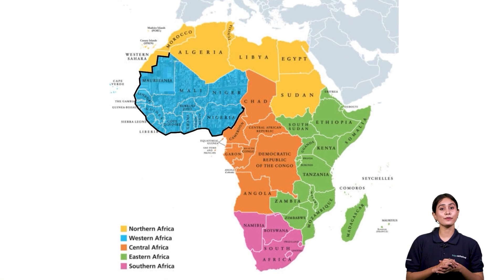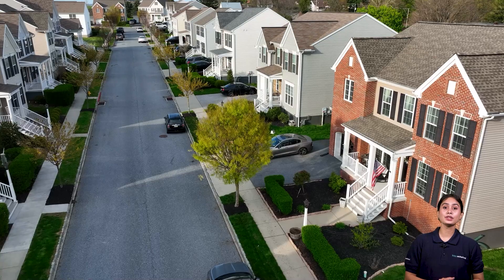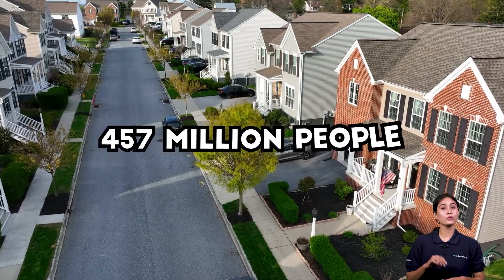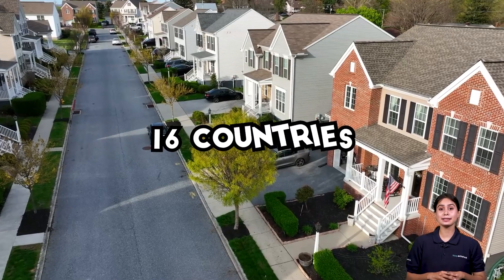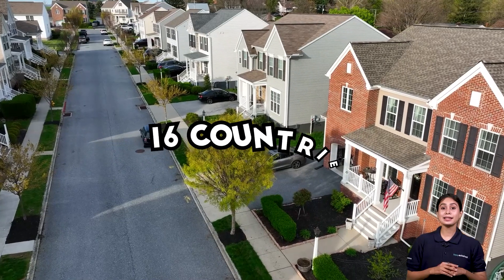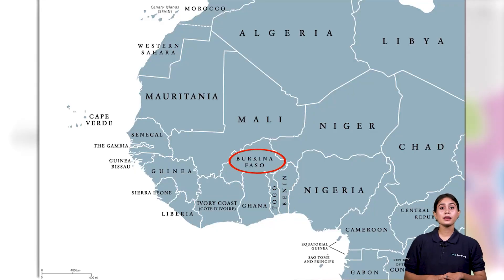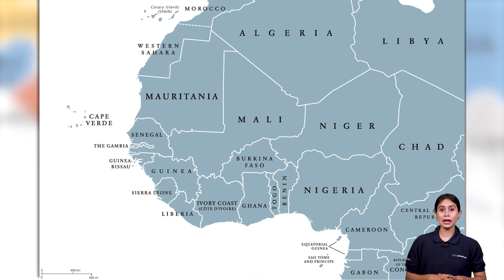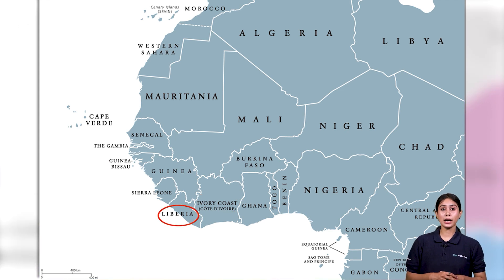Next are the countries of Western Africa. Western Africa, a sub-region of Africa, is home to 457 million people in 16 countries. These countries are Benin, Burkina Faso, Cabo Verde, Gambia, Ghana, Guinea, Guinea-Bissau, Ivory Coast, Liberia.